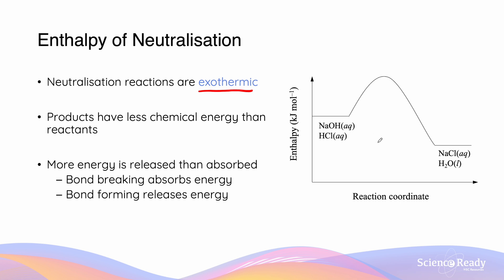We can tell this is going to be an exothermic type reaction if we look at these graphs — the product here is going to have less energy than the reactants started with. As a reminder, it may seem counterintuitive, but as the bond breaks it's going to absorb energy, since energy is required to break the bond. Forming the bond is what releases energy, and in this case the formation of bonds releases more energy than the breaking of bonds absorbs.